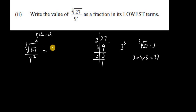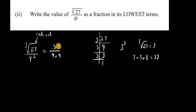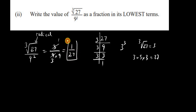So the answer for the numerator is 3. Now we divide by 9 squared, which means 9 times 9. We can simplify: 3 into 3 goes once, and 3 into 9 goes 3 times. That leaves us with 1 over 3 nines, which is 1 over 27. That's the answer as a fraction in its lowest terms.